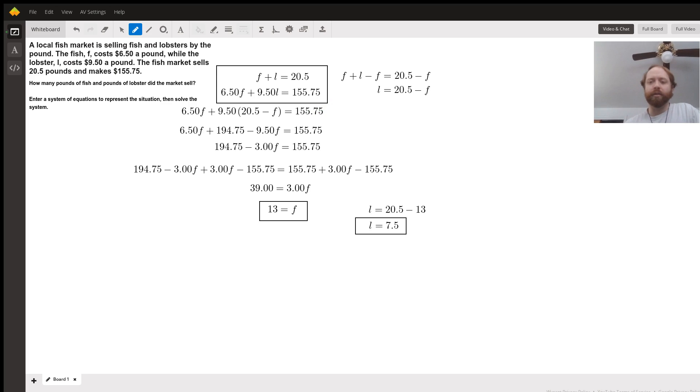Now to solve it, it gets a little trickier. We're going to take our first one here. We're going to subtract F from both sides just to get L by itself. And we get L equals 20.5 minus F.